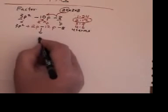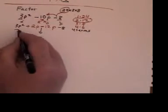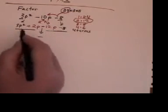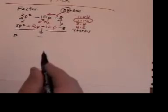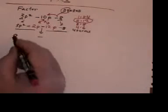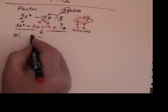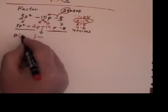I bring the minus sign down, and I'm going to factor both sides. Now in this case, the only thing that goes into both of those is the letter p.